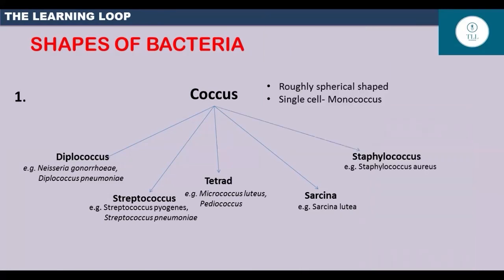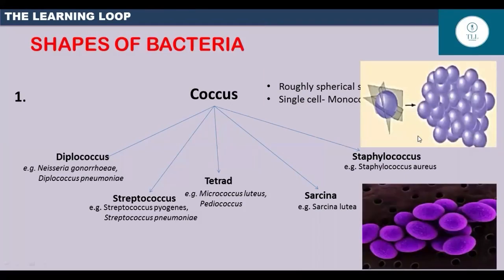Then the fifth type of coccal arrangement is staphylococcus. Here, the cells get divided into random planes and form an irregular cluster which looks like a bunch of grapes.